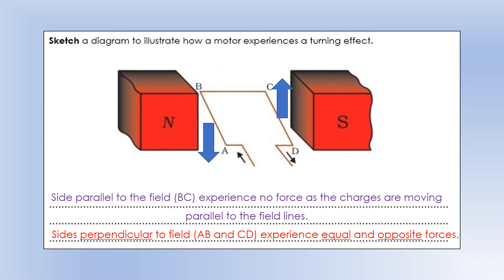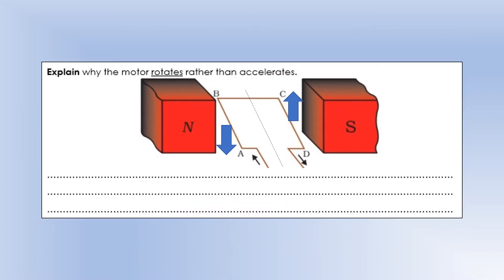Those two forces are equal to each other but in opposite directions — this is where we get the movement of our motor. However, the motor doesn't accelerate in a straight line. As Newton would note, these forces are equal and opposite, so the resultant force on the electric motor is zero. They cancel each other out, which is why it doesn't accelerate up or down.